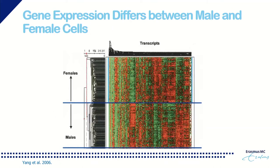The same mechanism even applies to cell experiments. You can see differences in expression of proteins in cells obtained from females versus cells obtained from males. Without going into details, these expression patterns really differ. So it is always important to realize whether your cells came from a male or female individual.